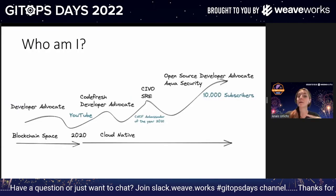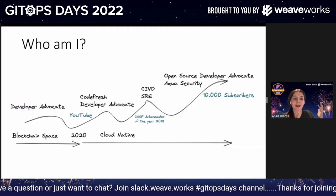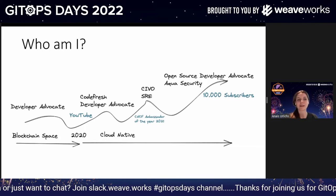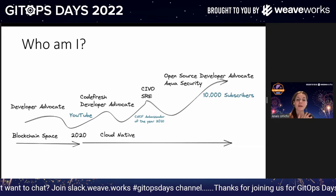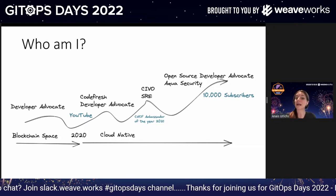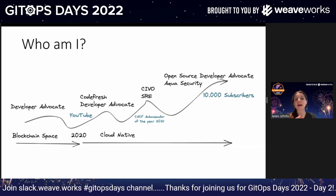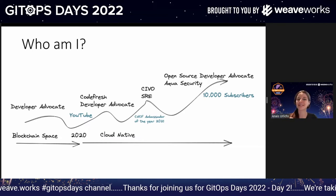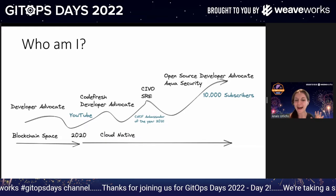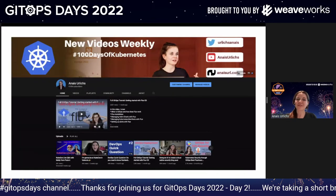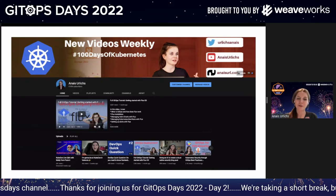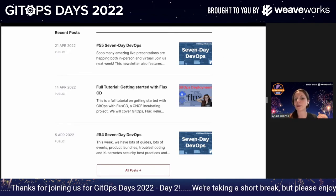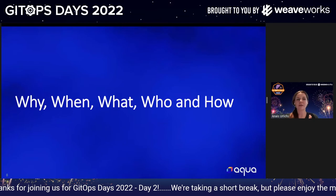Why am I talking to you about this? I've been working in this space since around 2020. Before that I was working in the blockchain space, then I joined the cloud-native space as a developer advocate. Last year I worked with a site reliability engineering team, and now this year I got back into open source developer advocacy focused on security. I also just reached 10,000 subscribers on YouTube, which is really exciting — big shout out to you if you're one of them. I also have a DevOps newsletter, but let's focus on security.